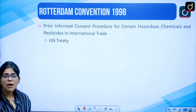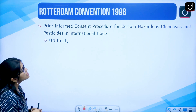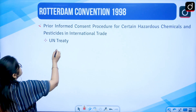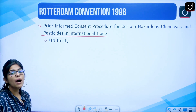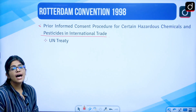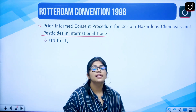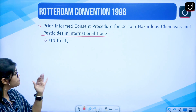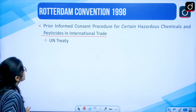Then we have the Rotterdam Convention 1998, about prior informed consent regarding hazardous chemical substances and pesticides in international trade. It is a UN treaty which says that because of different international trades, some hazardous chemical substances are also transported, and we need to reduce such hazardous substances.